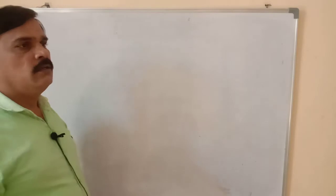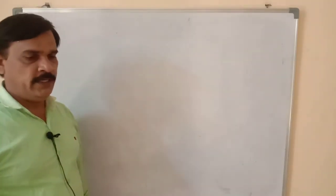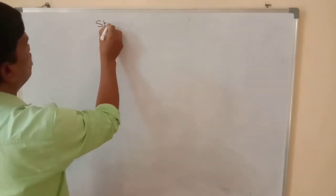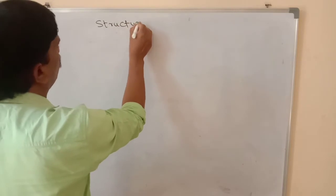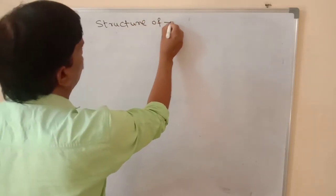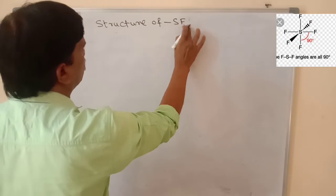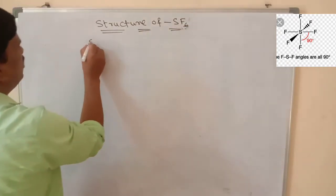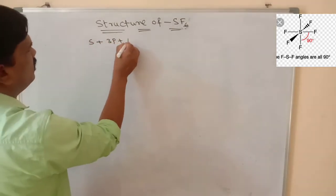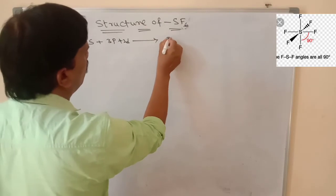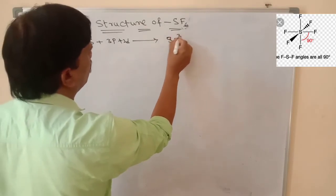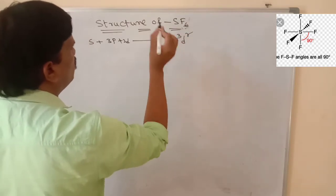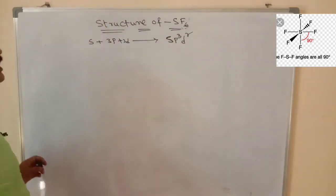Now let's discuss sp3d2 hybridization. For sp3d2 hybridization, the best example is sulfur hexafluoride, SF6. In sp3d2 hybridization, 1s orbital, 3p orbitals, and 2d orbitals combine to give sp3d2 hybridization — forming 6 sp3d2 hybrid orbitals of equal energy and same shape.